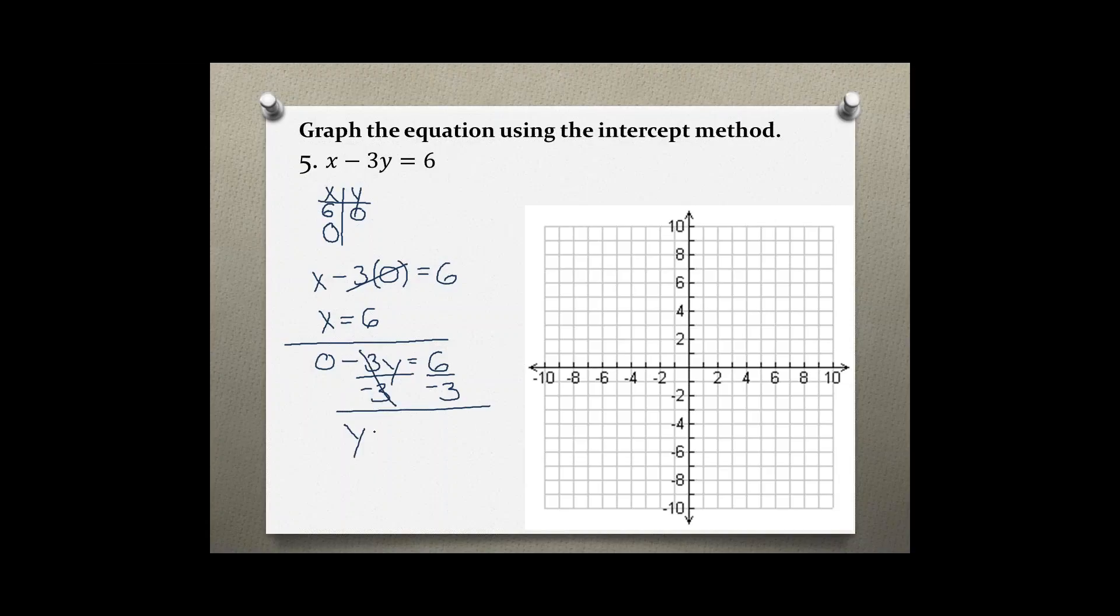So y equals negative 2. Our y intercept is at 0, negative 2. You can write this as a point.